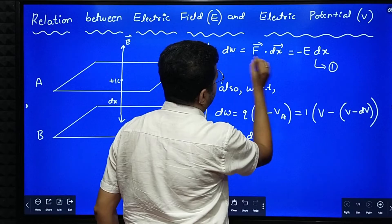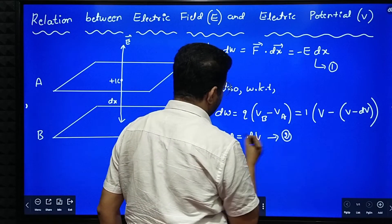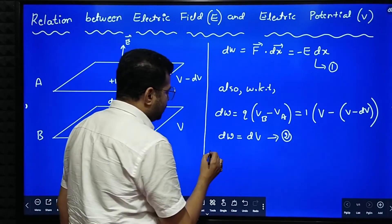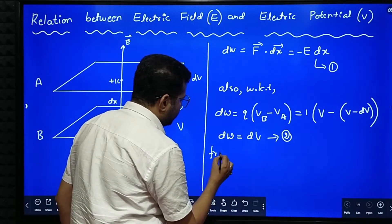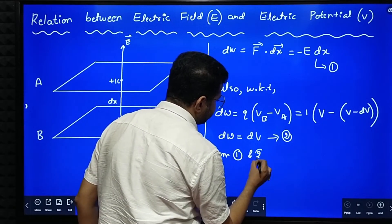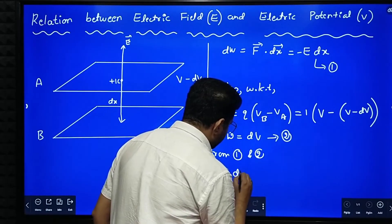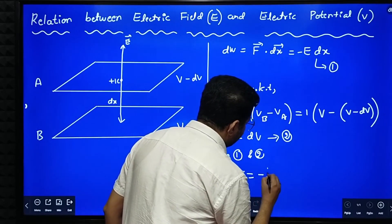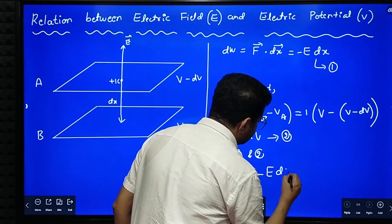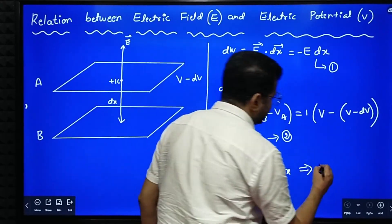So here, dW is equal to minus E dx. Using one more method, we got dW is equal to dV. So equate. On equating 1 and 2, from 1 and 2, what we can write. dV is equal to minus E into dx. Or this implies directly I can write. E is equal to minus dV by dx.